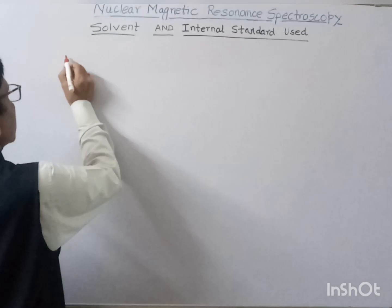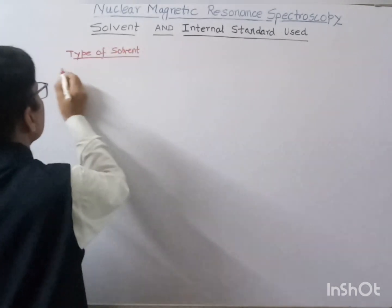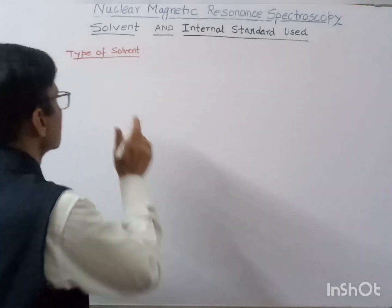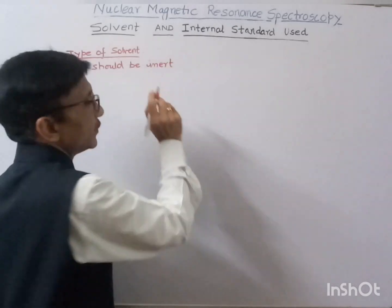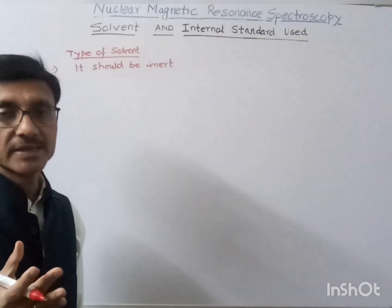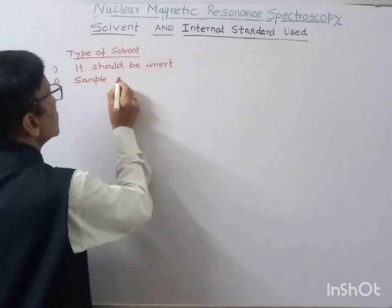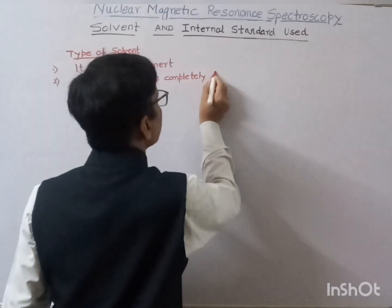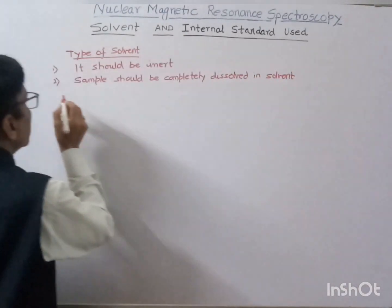So what type of solvent should be used? Some of the characteristics of the solvent: first, the solvent should be completely inert, or it should not react with the sample. Second, the sample should be completely dissolved in the solvent, or we can say the sample should be completely miscible with the solvent.